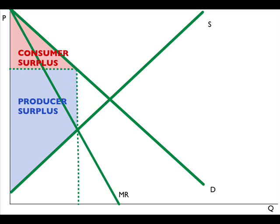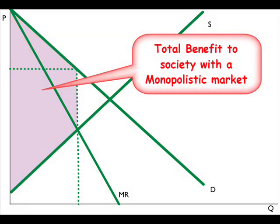Remember, the total benefit to society, then, is the consumer surplus and the producer surplus.